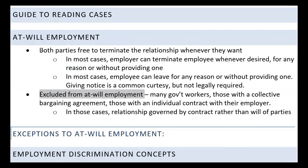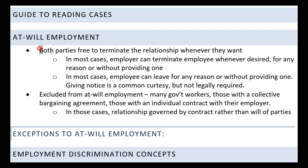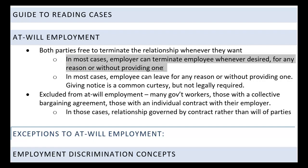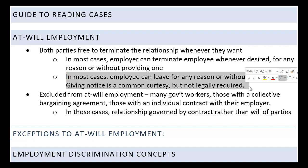In the United States, the default setting for an employment relationship is what we call at-will. At-will employment means that at any given time, both parties are free to terminate the relationship whenever they want. In most cases, an employer can terminate an employee for any reason they want to — they don't even have to legally provide a reason. And in most cases, an employee can leave an employer for any reason or without providing a reason at all.